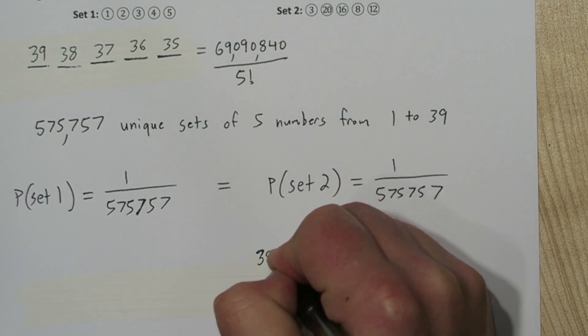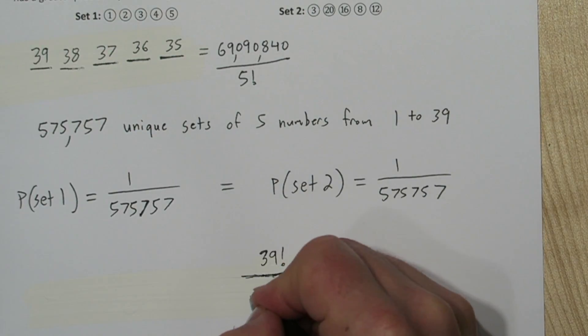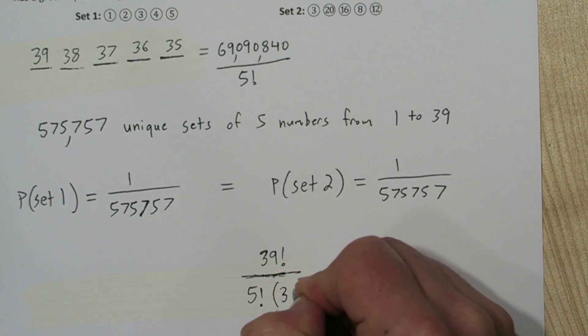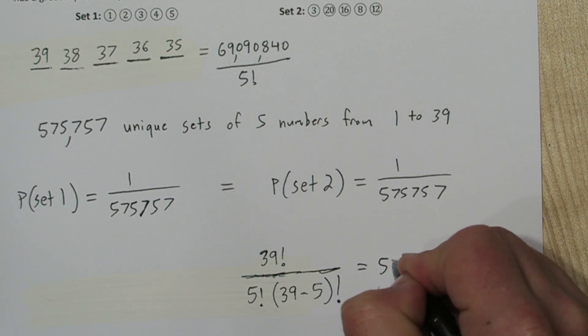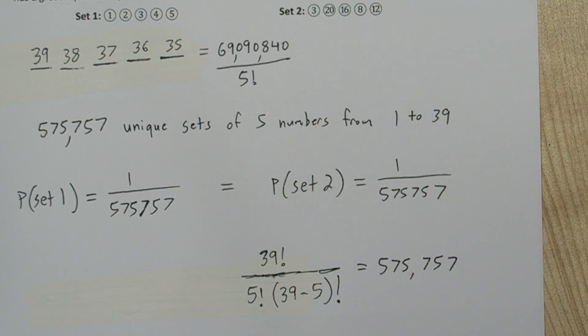You can also find the number of ways to select 5 numbers out of 39 options using the combination formula. 39 factorial over 5 factorial times 34 factorial.